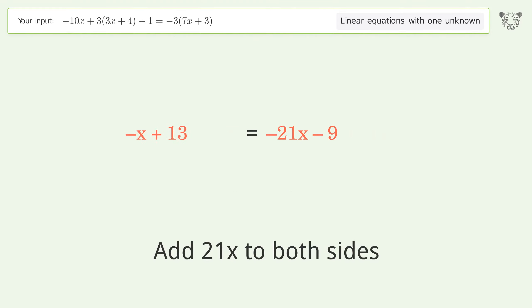Simplify the arithmetic. Group all x terms on the left side of the equation, add 21x to both sides.